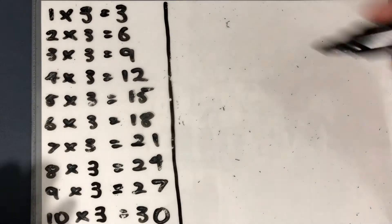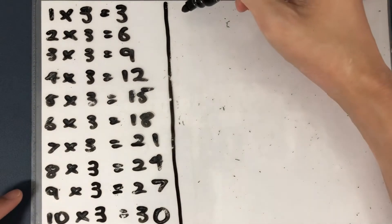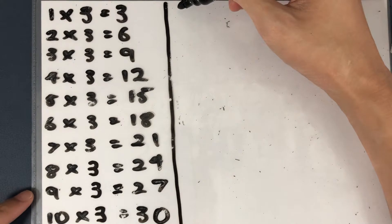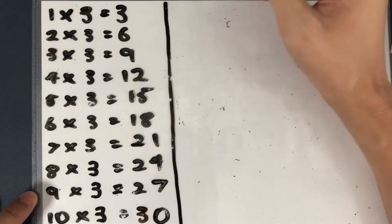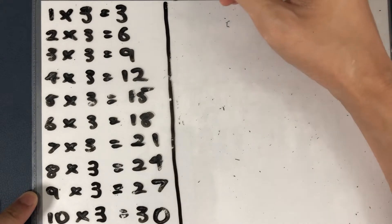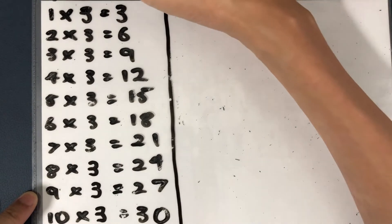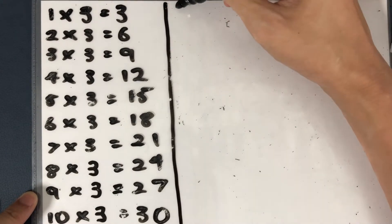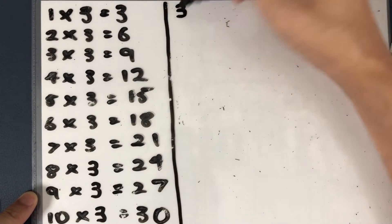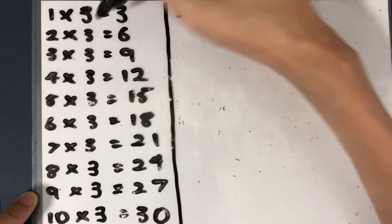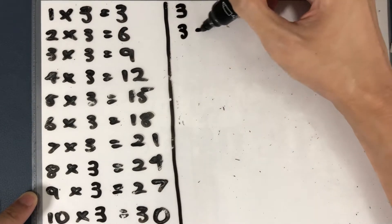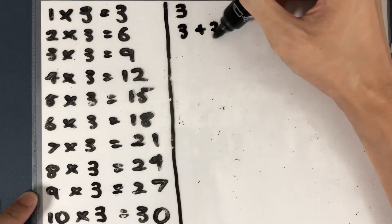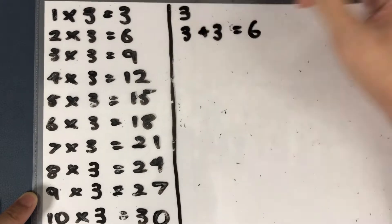I'm going to very quickly go through how we managed to get that. Remember, multiplication is the same as repeated addition. So, repeated addition: 1 three is just 3. 2 times 3 is the same as 2 threes, so 3 plus 3, and that will give you 6.